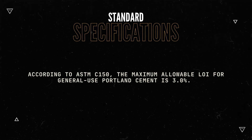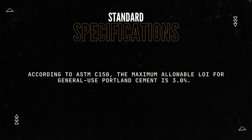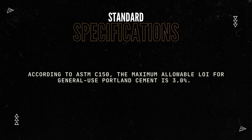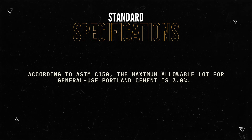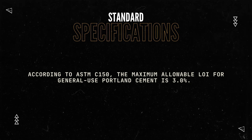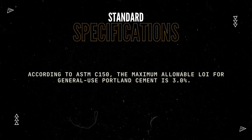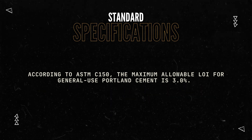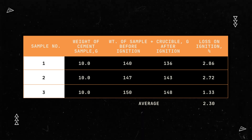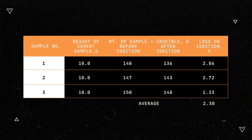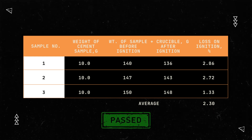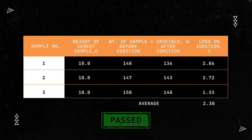Let's proceed to results and discussion. According to ASTM C150, the maximum allowable LOI, or loss on ignition, for generally used Portland cement is 3%. This specification ensures that the cement has a low content of volatile compounds and impurities which can affect the performance and durability of concrete. Based on our calculations, the average percent loss on ignition across all three samples resulted in approximately 2.30%, which passes the ASTM C150 standard specifications for Portland cement.